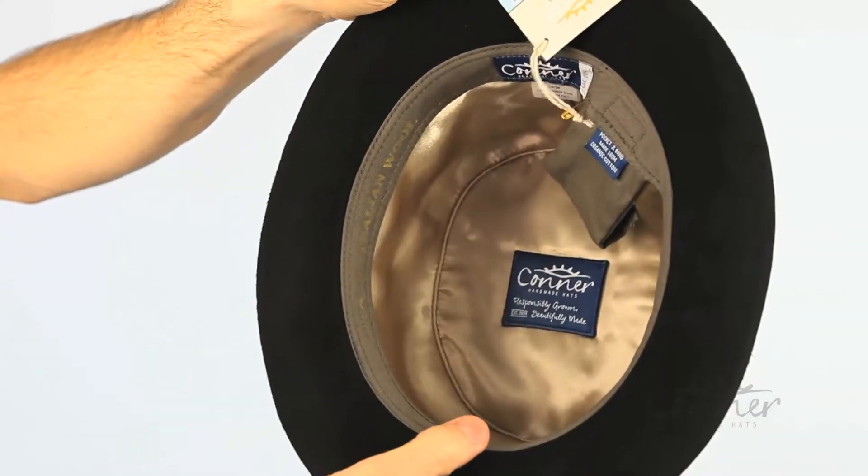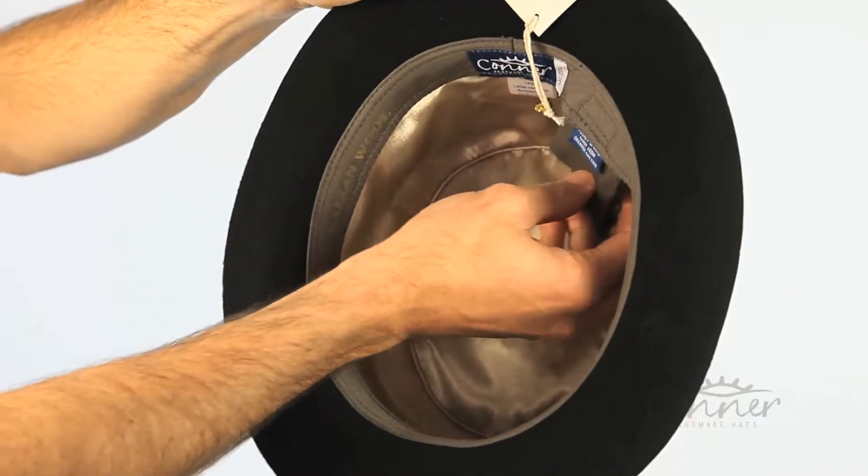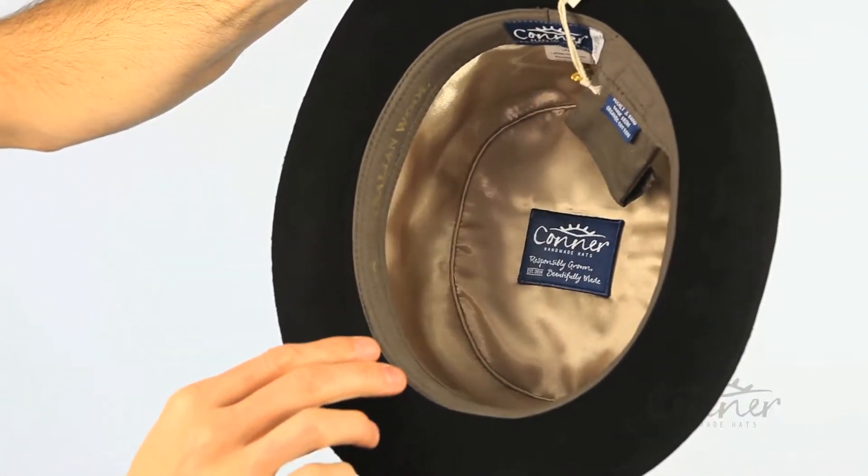At the moment there's details all about our hats with how to care for the hats and our warranty. Our labels are all made from recycled plastic bottles.